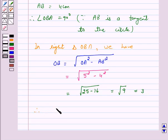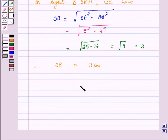Hence OB is equal to 3 cm. Hence the radius of the circle is 3 cm and this is our answer.